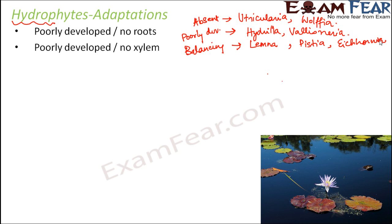So you need to remember these examples for various categories. Moving on to the next adaptation — hydrophytes have poorly developed or no xylem. Xylem are the vascular tissues primarily needed for conduction of water and minerals, but in this case the plants are already adapted to living in water, so their vascular tissues are poorly developed. Many of the plants do not have xylem at all, and for some that do have it, it is very poorly developed.